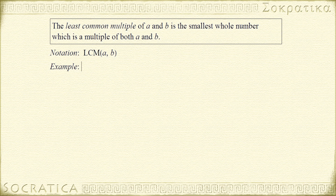Let's see an example. Let's find the least common multiple of 6 and 8. The idea is to list the multiples of 6, then list the multiples of 8, and find the smallest number that's a multiple of both of them. That will be the least common multiple.